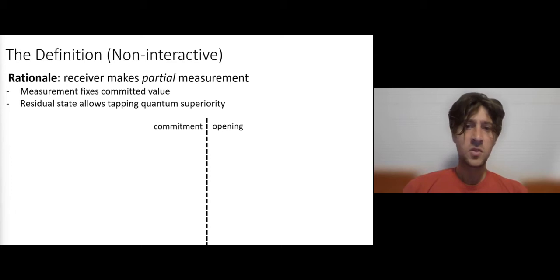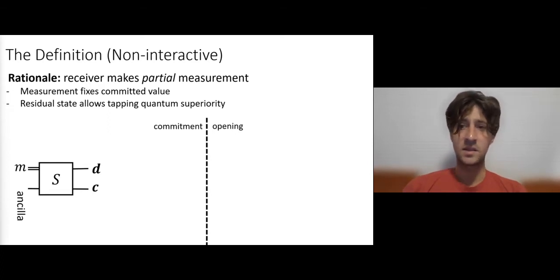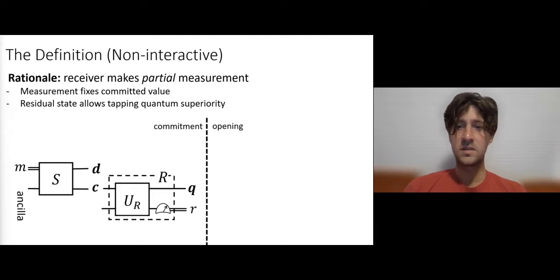Now I'll go into the definition step-by-step, and I'll start from the syntax of the commitment. So here the sender takes as input a classical message M, and perhaps a nonce, and it outputs a quantum commitment C, together with a possibly quantum decommitment D. The receiver is then going to apply some unitary and measure part of the result. And this will result in some classical string called R, and also a residual quantum state that we're going to call Q.